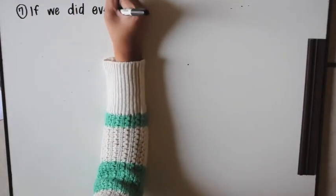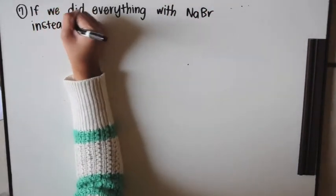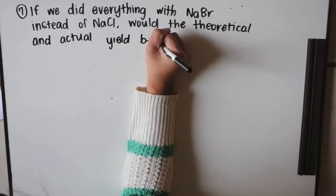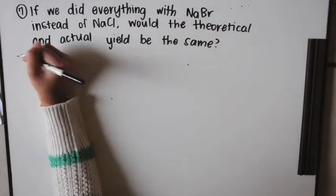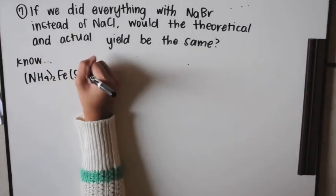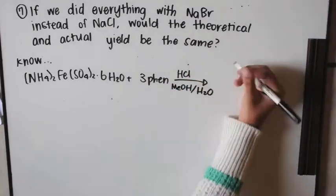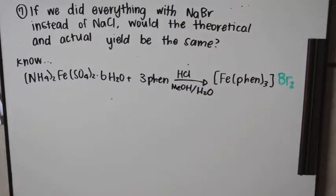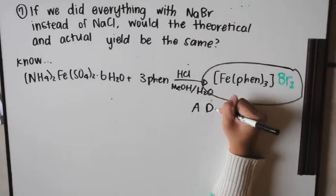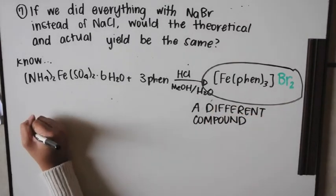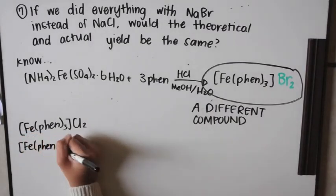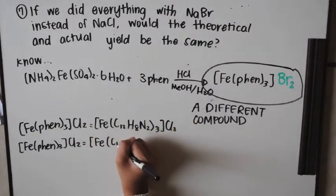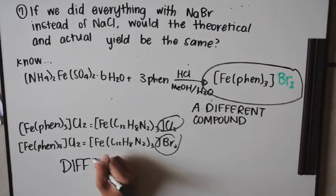Number seven asks: if you did the same lab but used NaBr instead of NaCl, how would that change your answers? The balanced equation — ferrous ammonium sulfate plus 3-phen produces one mole of iron tris-phen bromide salt — has no structural difference from before, just a different product compound. The only difference between iron tris-phen chloride salt and iron tris-phen bromide salt is their molar masses.